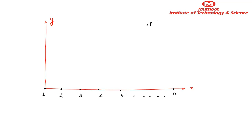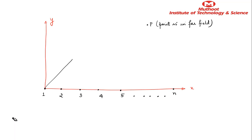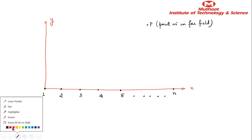What we are going to do is take a point P which is in the far field. It is understood that this is in the far field — whenever we are calculating a radiation pattern, we are always doing it in the far field. Now you join each of these elements to point P.